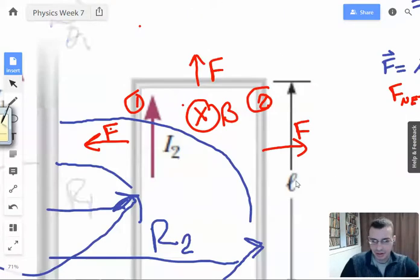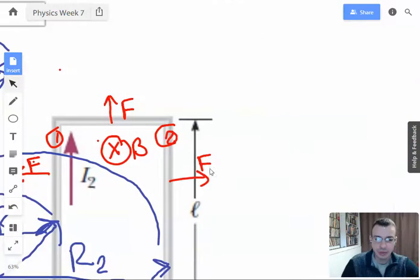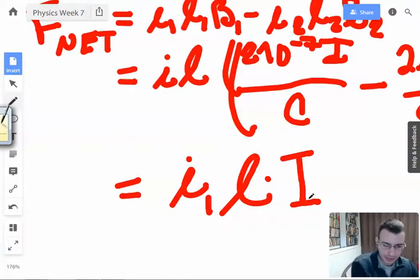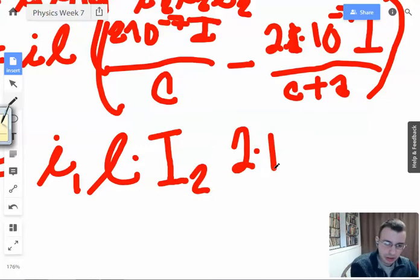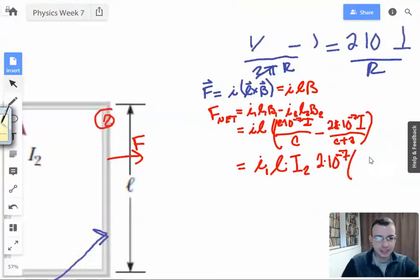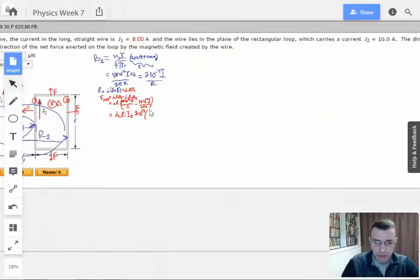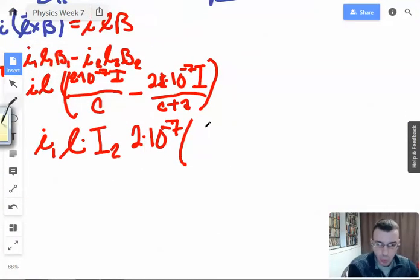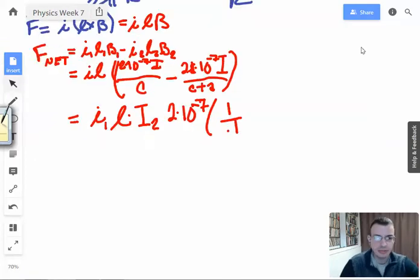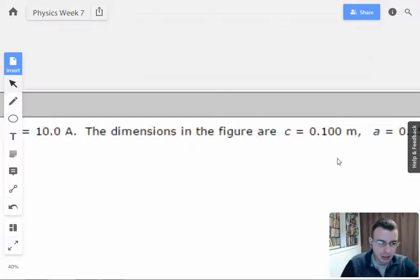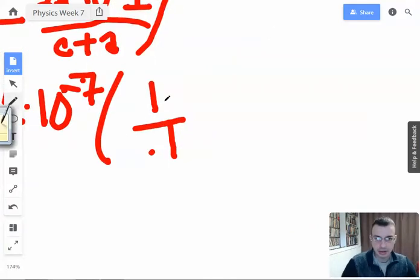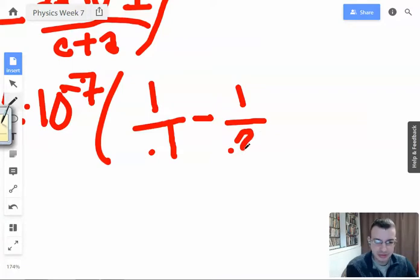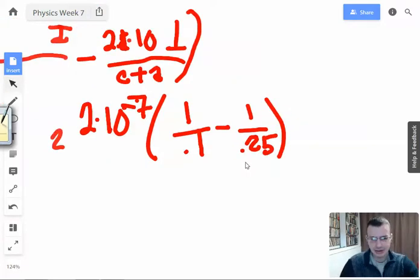And then we're going to have 1 over C where C is 0.1, which will just be 10. And then the A is 0.15, so 0.15 plus 0.1 is 0.25, minus 0.25. That's very nice of them, they gave us 10 and 4. So to simplify things, we're going to say equals, that is 10 minus 4 which is 6.